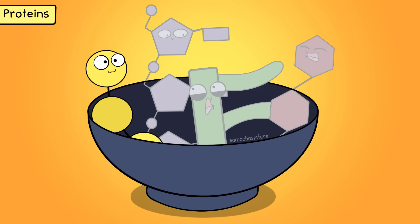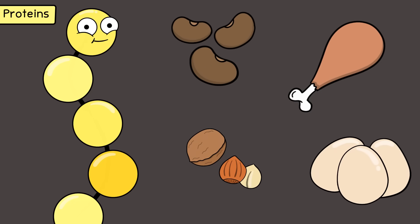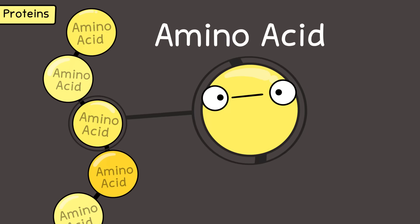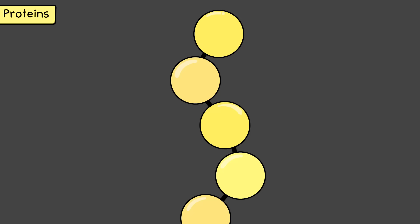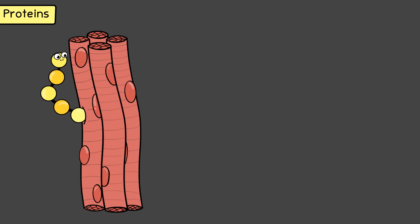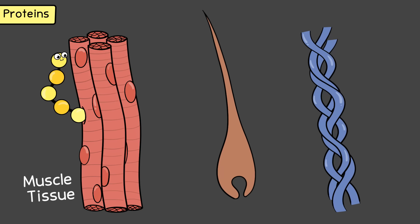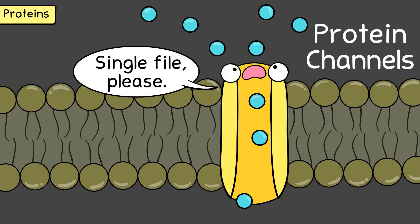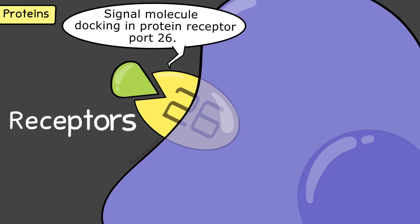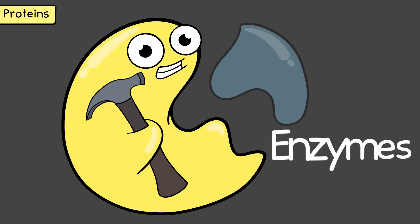Next up, proteins. Protein food sources include beans, meat, nuts, and eggs. The monomer of a protein is an amino acid. Usually proteins consist of many amino acids bonded together, and there are different types of amino acids. Structure-wise, tissue like muscle tissue consists heavily of proteins. Proteins can make up all kinds of other structures—hair or collagen, for example. Proteins can also be found embedded in cell membranes as protein channels, which are important for letting certain substances pass through. Proteins can also be receptors, which are critical in cell signaling so cells can coordinate actions together. Most enzymes are made of proteins.